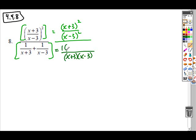So if I take the numerator of the first fraction, multiply it by the missing LCD factor from this denominator, it's missing an x minus 3, plus the next fraction's numerator times the missing LCD factor from its denominator, it's missing an x plus 3.